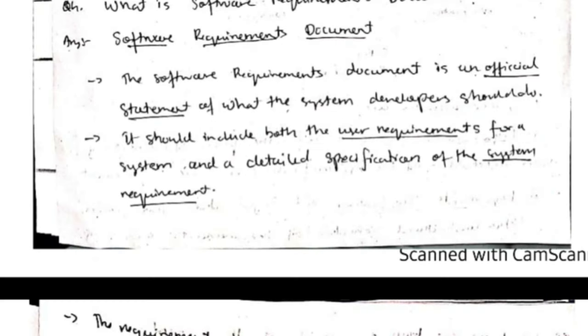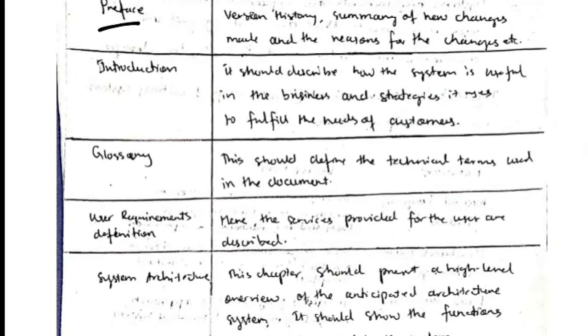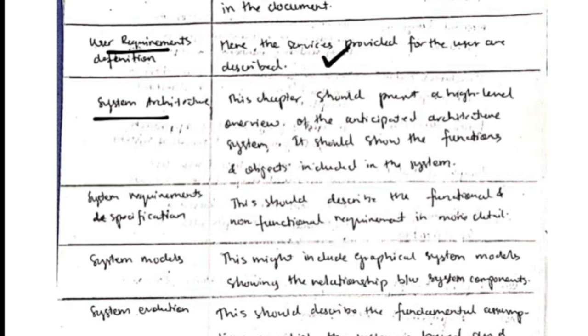The software requirements document is where you document all the requirements. It contains: a preface with version history and previous changes; an introduction summarizing what the product does and how it provides value to the business; a glossary with technical term meanings; and a user requirements definition and system architecture section describing what is expected from the product and how it is designed.